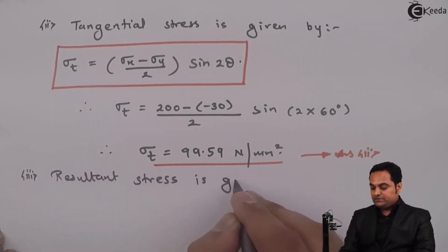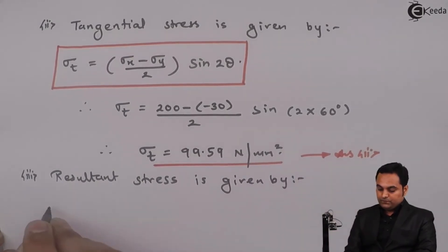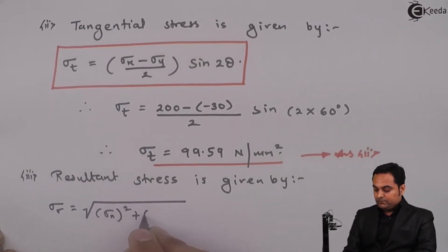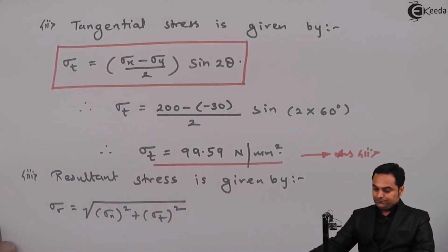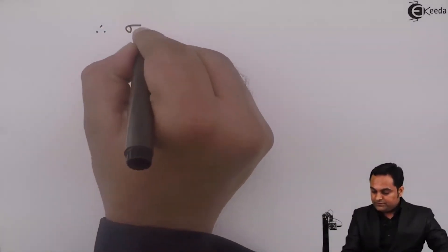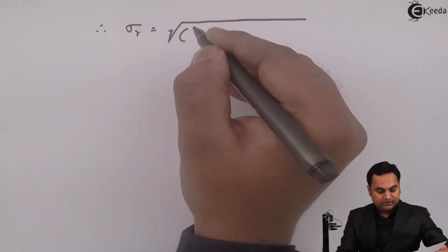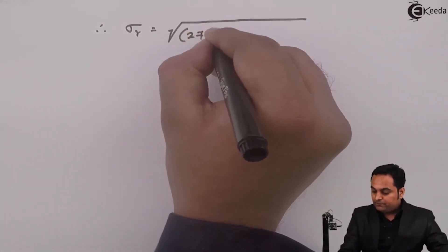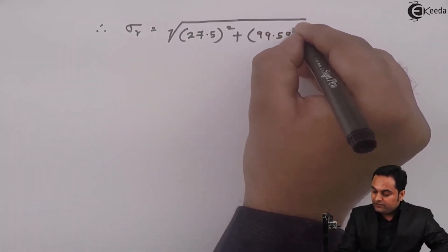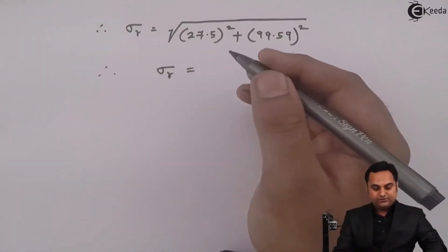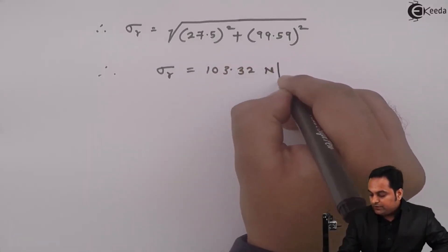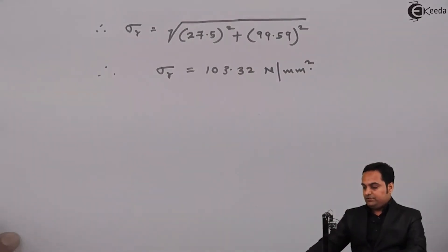The third question was the resultant stress, given by: sigma r = √(sigma n² + sigma t²). Substituting sigma n = 27.5 and sigma t = 99.59, the resultant stress comes out to be 103.32 newton per mm square. This is the third answer.